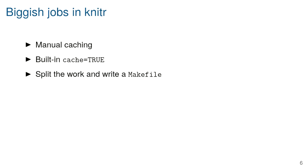If jobs are not hugely long — just a few minutes — you might want to leave them in your R Markdown document and not pull them out, but cache the results so they only get run when needed. There are different ways to handle big jobs in knitr: you can manually cache the results, use the built-in caching that knitr and R Markdown provide with `cache = TRUE` for a code chunk, or split the work into a separate file and write a Makefile to automate them.